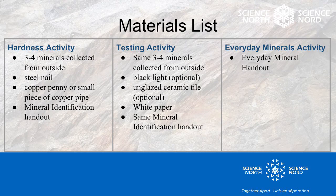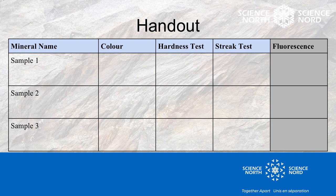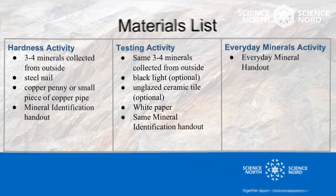Let's take a closer look at minerals. For this activity, you will need three to four minerals collected from outside, a steel nail, a copper penny or a small piece of copper pipe, a mineral identification handout, a blacklight (optional), an unglazed ceramic tile (optional), and white paper. Now if you don't have all of these materials, don't worry — you can definitely follow along with me.